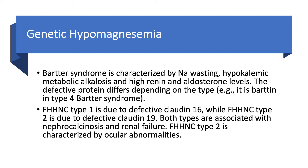Both types cause nephrocalcinosis and subsequently renal failure, but you distinguish them because type 2 has ocular abnormalities. On a test question, if they give you all the manifestations and say the child has some kind of eye problems, then the answer would be type 2 FHHNC.